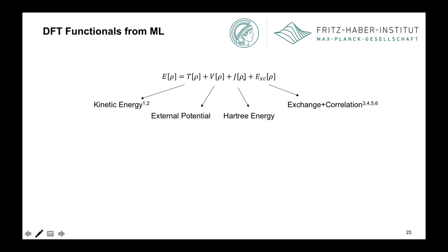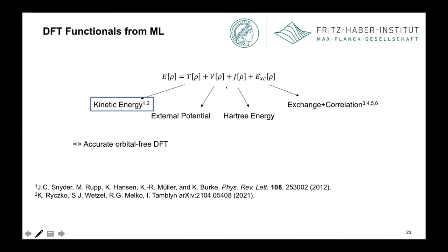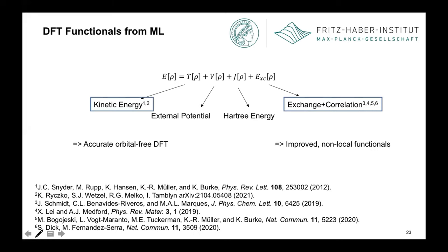If we want to build DFT functionals from ML, we could go directly to the full density functional. But since we want to keep as much physics in the model as possible, I think it's reasonable to consider which contributions we want to approximate within ML and which to treat differently. The obvious candidates for ML modification are the kinetic energy functional and the exchange-correlation functional. The external potential and Hartree energy are not so expensive to evaluate and get all the correct long-range behavior into the model. There has been a lot of work very recently on ML kinetic energy functionals, especially from Kieron Burke, and a lot of work on exchange-correlation functionals, either looking at exchange or correlation or both together.